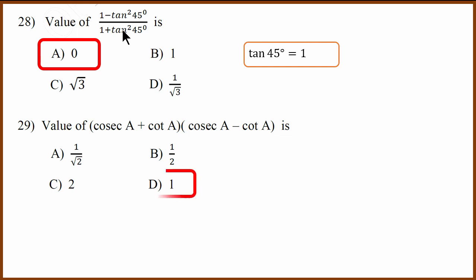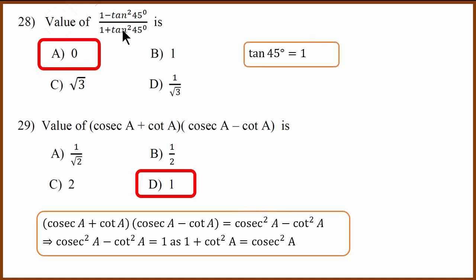29th question is 1 because cosecant A plus cot A multiplied by cosecant A minus cot A, a plus b multiplied by a minus b, which is a square minus b square. So that is cosecant square minus cot square. Now that is equal to 1 because 1 plus cot square equals cosecant square. So that is 1.